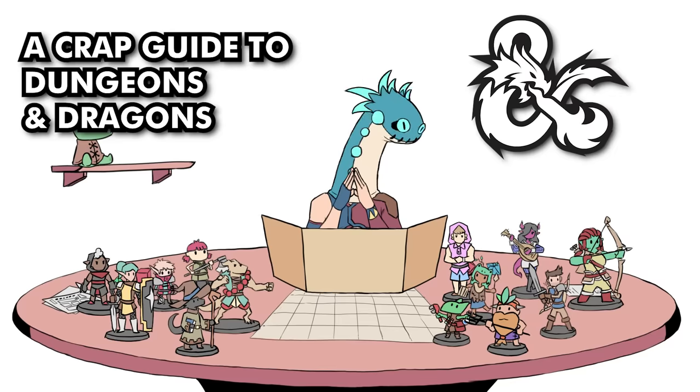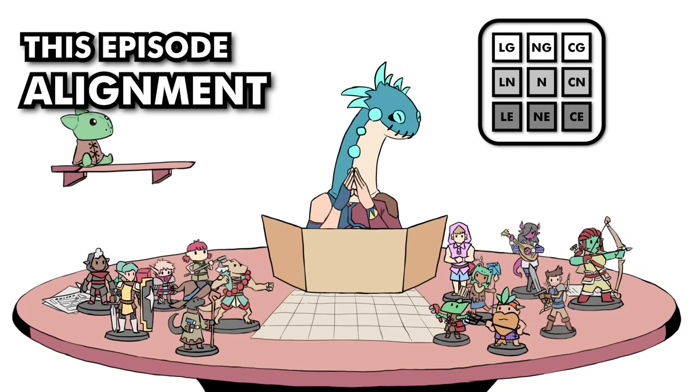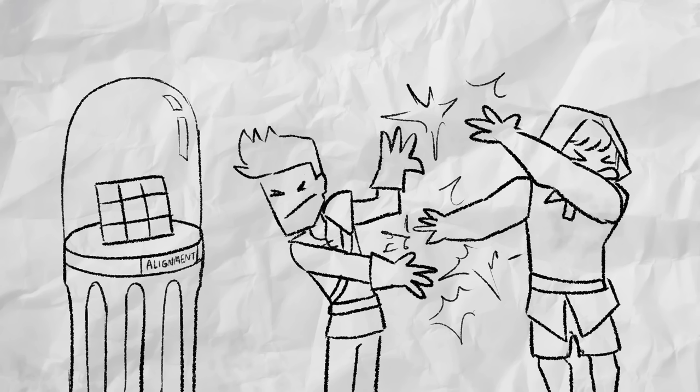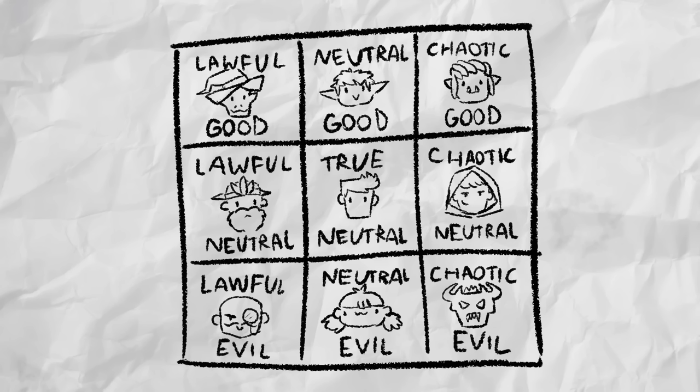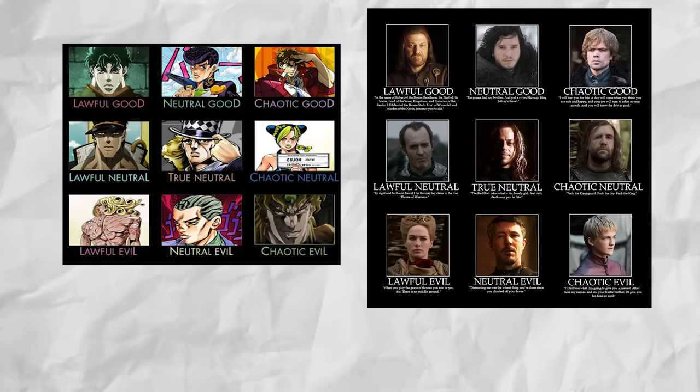Welcome to a crap guide to D&D. An old relic of the past and the easiest way to start fights both on and offline, the D&D alignment chart is its version of a personality quiz that no one can agree on.